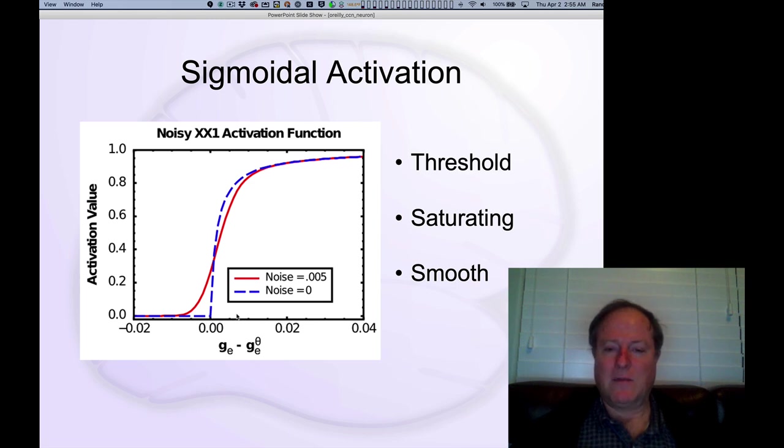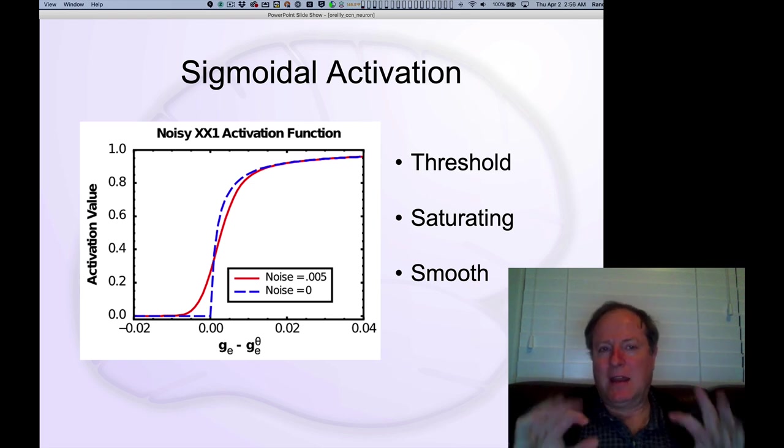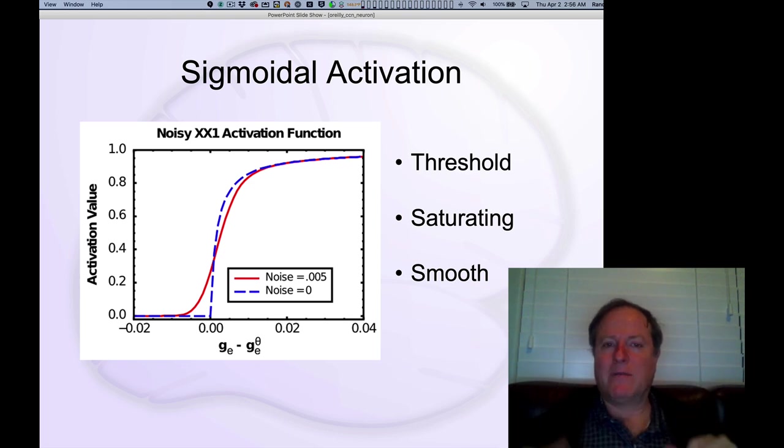And then the last thing we do to smooth out this kind of rough, very sharp transition point right at the threshold is we add some noise to the overall system. And again, because we want to keep the system fairly predictable and reliable, we're adding the noise, kind of baking it into the equation, instead of adding it literally trial by trial, second by second. We sort of calculate what the average effect of the noise would be, and that's what's shown here in this red line, is essentially convolving mathematically this equation with a Gaussian noise kernel.